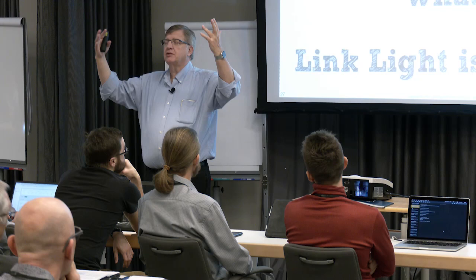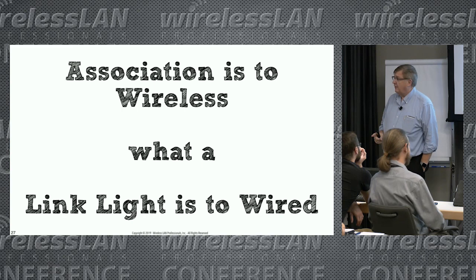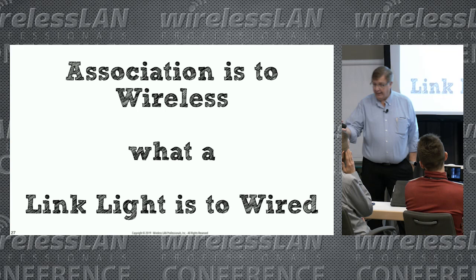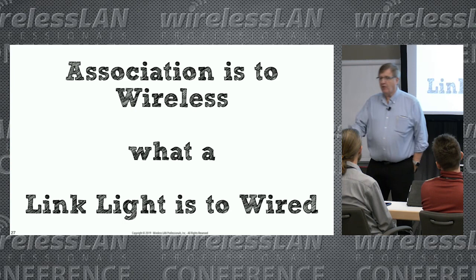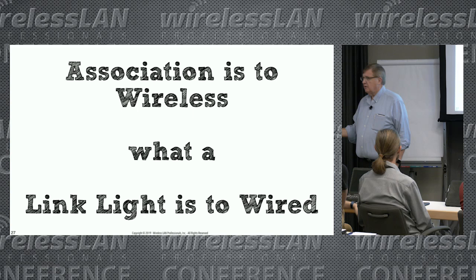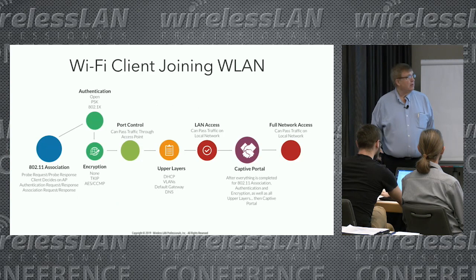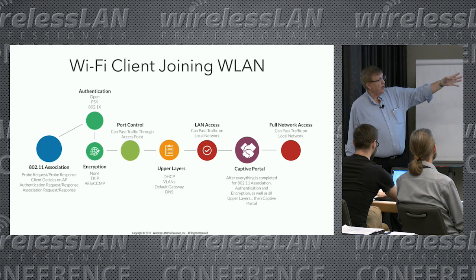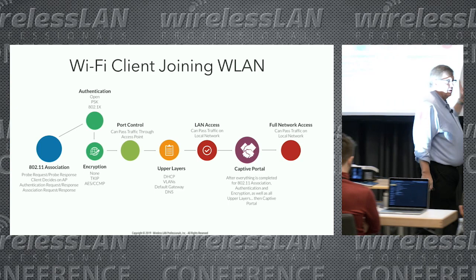Here's one to memorize: association is to wireless what a link light is to wired. Association is to wireless what a link light is to wired. If you get a link light, do you troubleshoot up the stack or down the stack? Up - because everything below works. Same thing in wireless: if you are associated, you don't have a Layer 2 problem. 'But it's slow!' That's an entirely different thing than saying Wi-Fi isn't working.